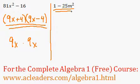Hey, how about 1 minus 25m squared? Okay, that is also a difference of two squares.